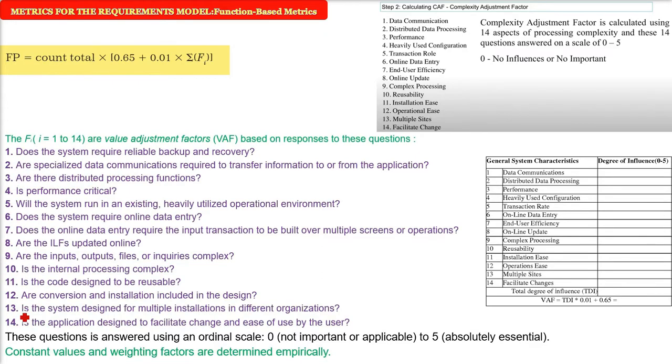So these are value adjustment factor VAF based on the responses to these questions. For example, data communication is required, reusability is required, online data is required. But what is the complexity? We'll give a number from 0 to 5. 0 means we don't require it, it has no influence. But 5, yes, it is very important. 0 means not important, 5 is absolutely essential. So any number between 0 and 5 can be assigned to all these 14. For example, data communication is very important, 5, online update not required, 0, reusability somewhat, so gave 1.